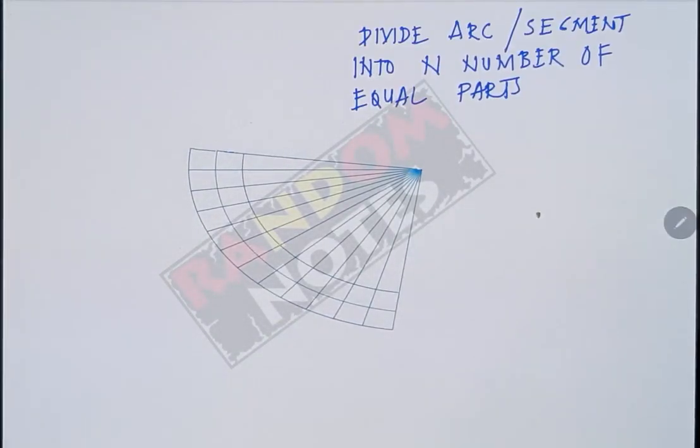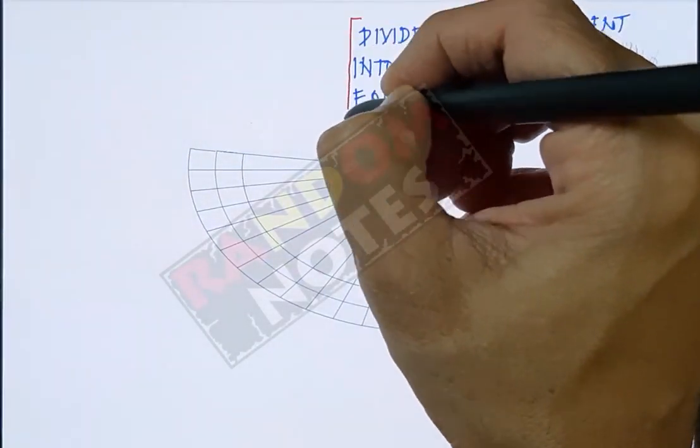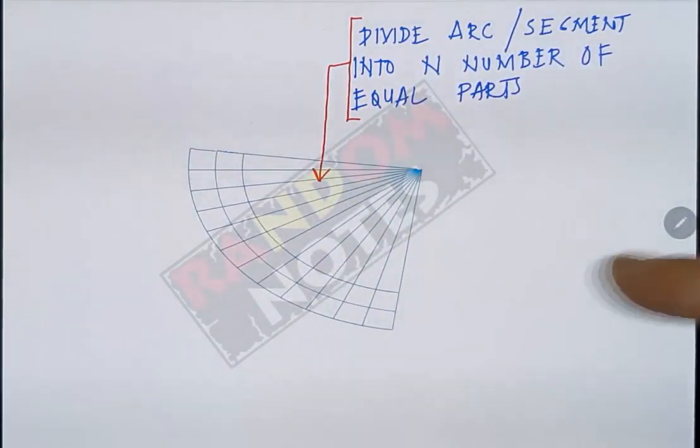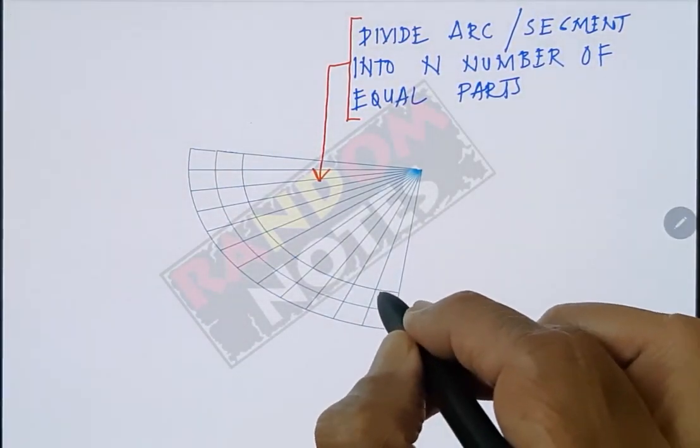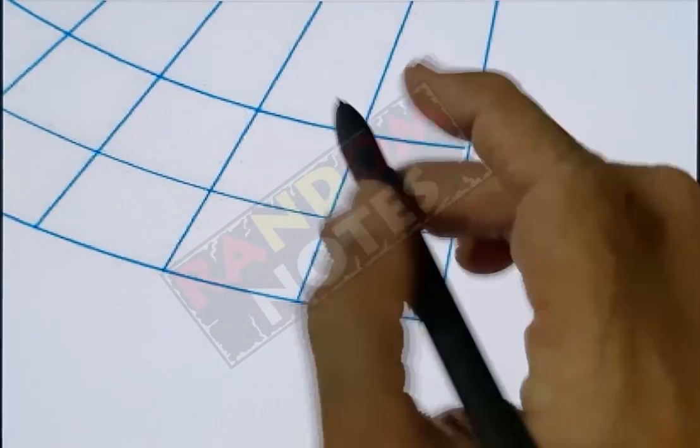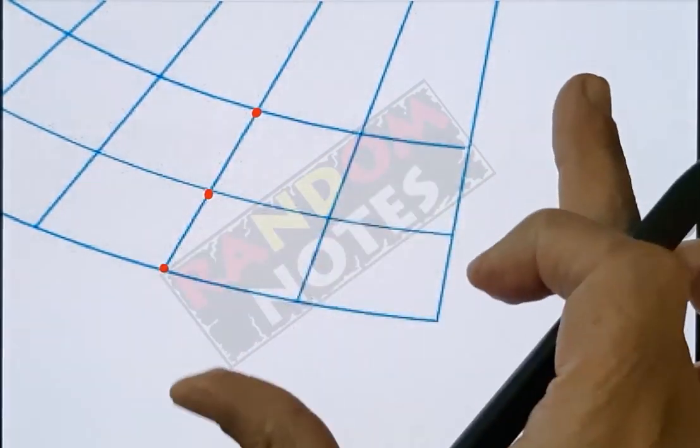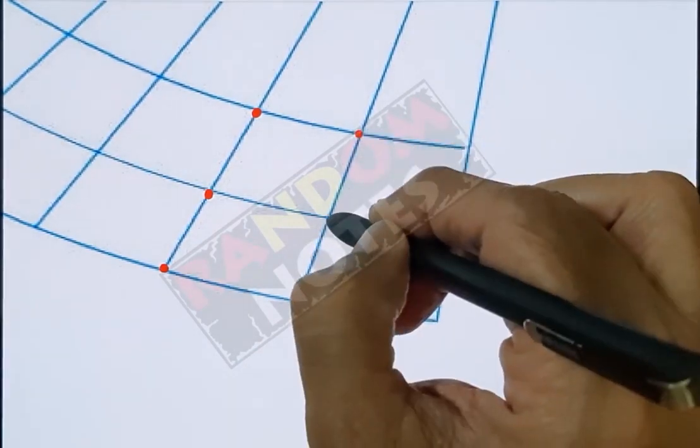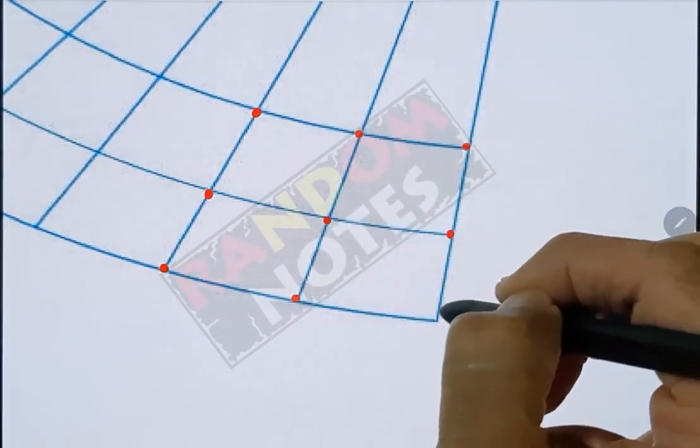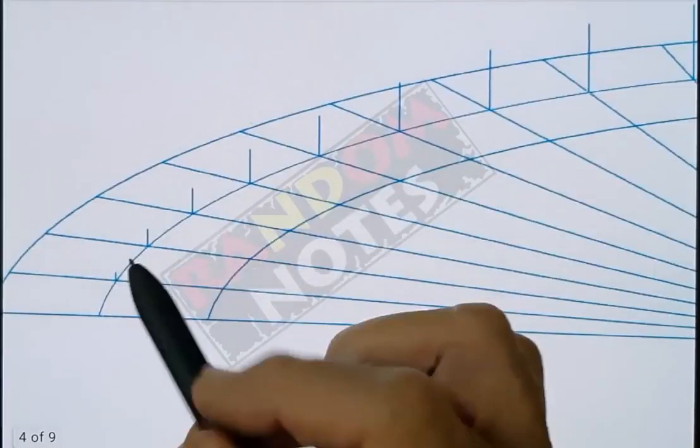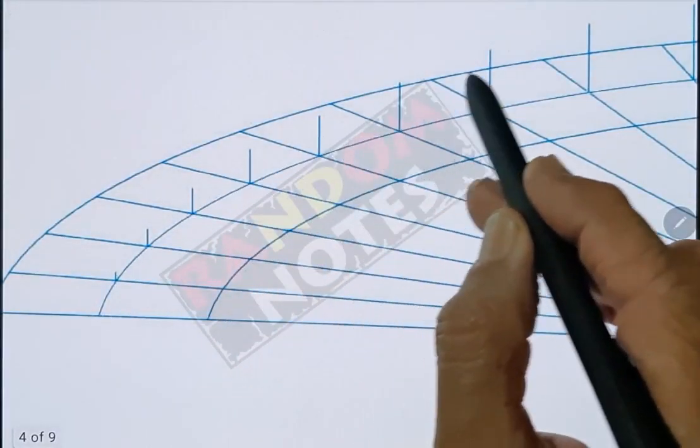So you can see that I have made equal divisions of the total run by taking radial lines from the center of the arcs. Now these radial lines cut the three arcs at these three red points. At the meeting of each radial line with the central arc let us make these vertical lines.